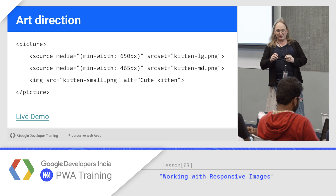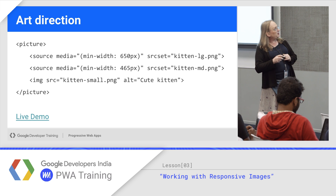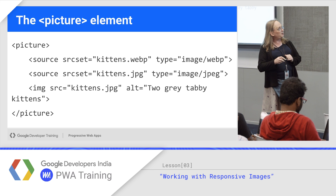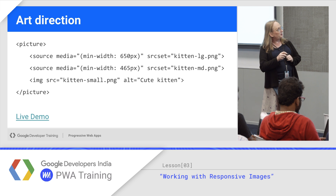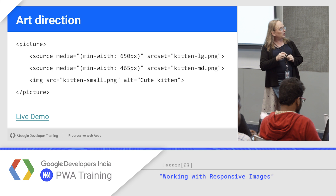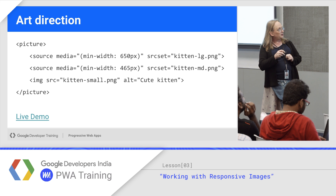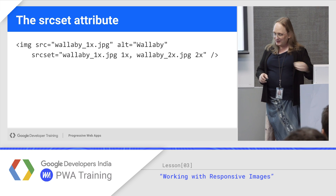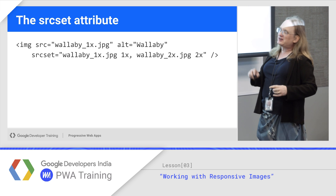For art direction, you can inject a media query into the source statement. In the previous example we had a type on the source statement; you can have a type and a media query together. So if it's at least 650 pixels or bigger, use the large kitten. If that fails but it's 465 or bigger, use the medium kitten. If that fails, use the small kitten. That's changing images based on screen size.